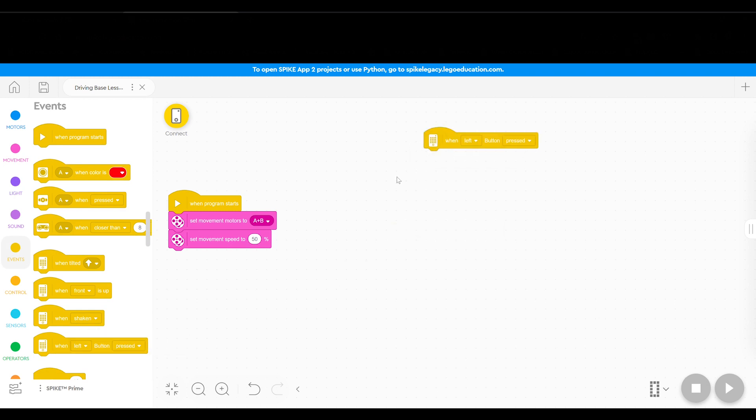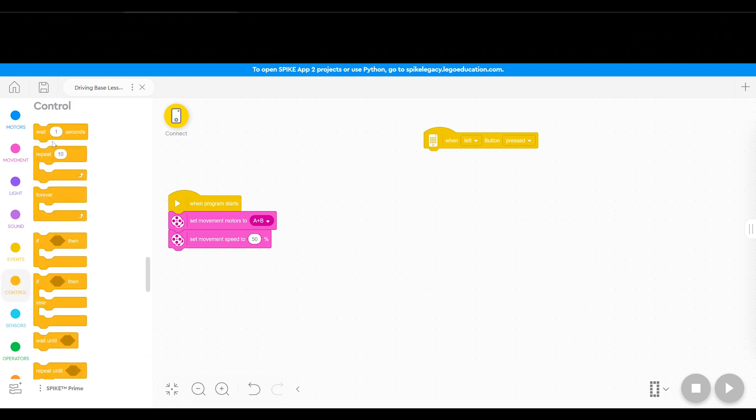This is where I also introduce them to the wait command in control. I have the students start under the stack with a wait of one second, and I tell them to change it to 0.5 and set up a half second wait.